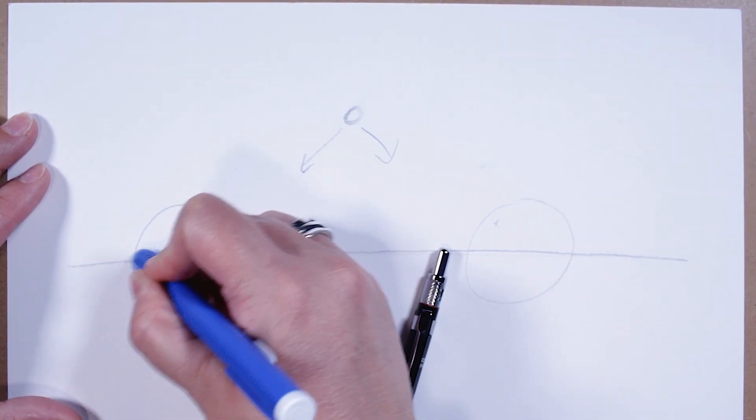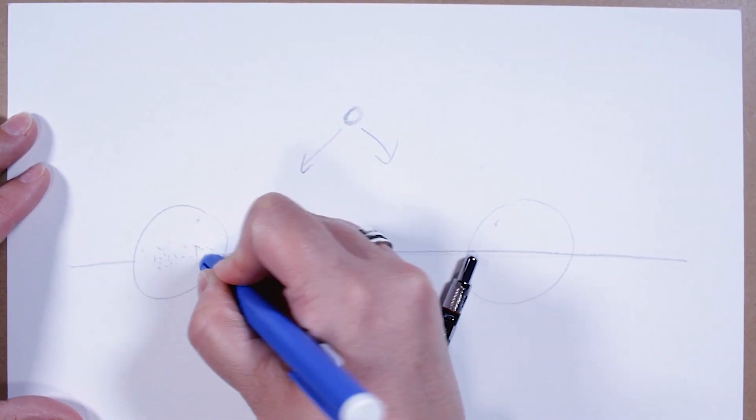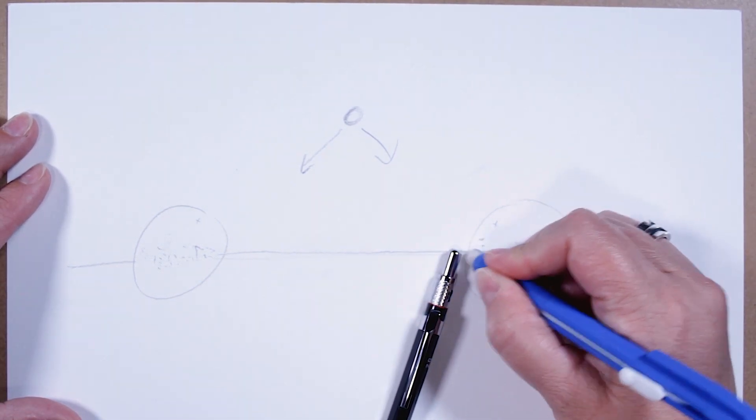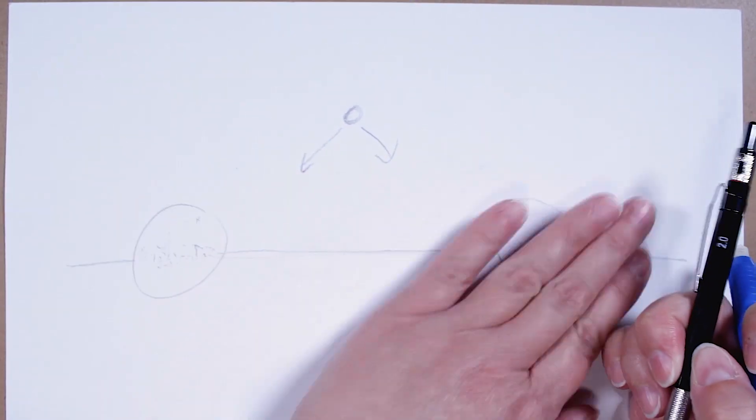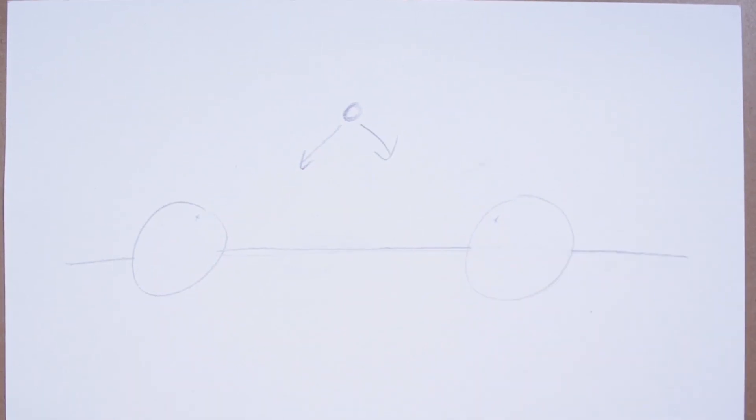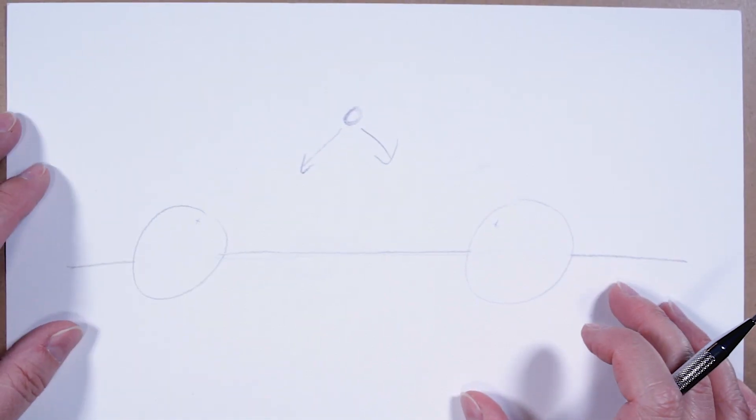I'm going to erase the horizon line out of the middle of these circles so we can start shading here in a minute. Okay, so now it's time to start shading.